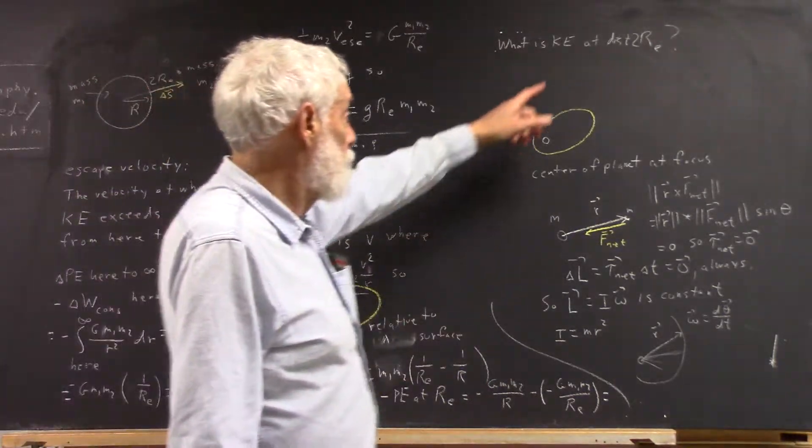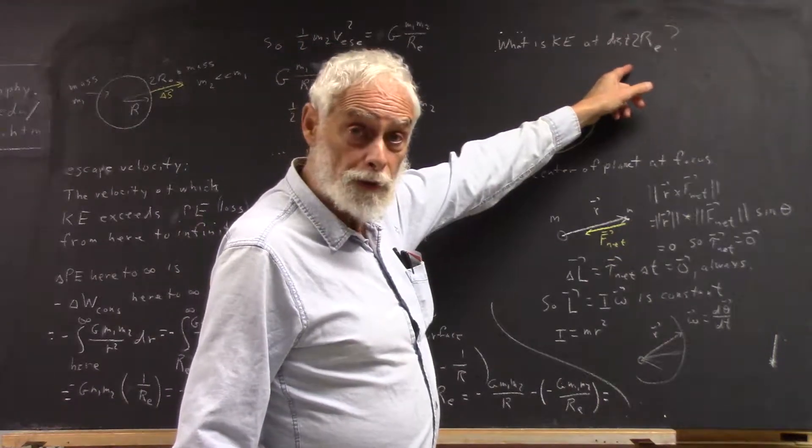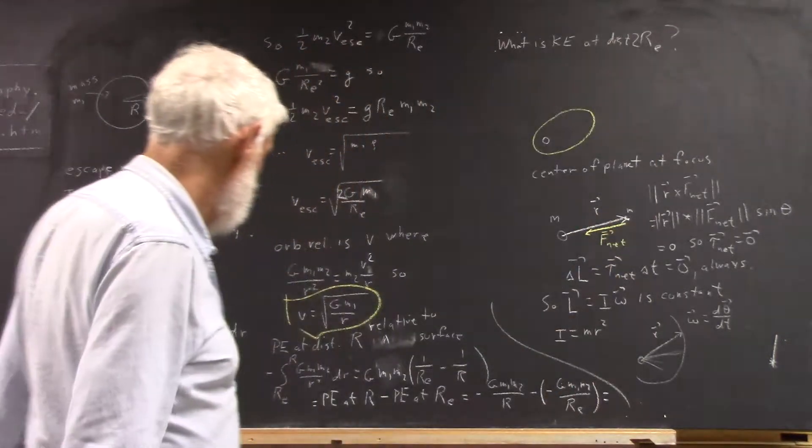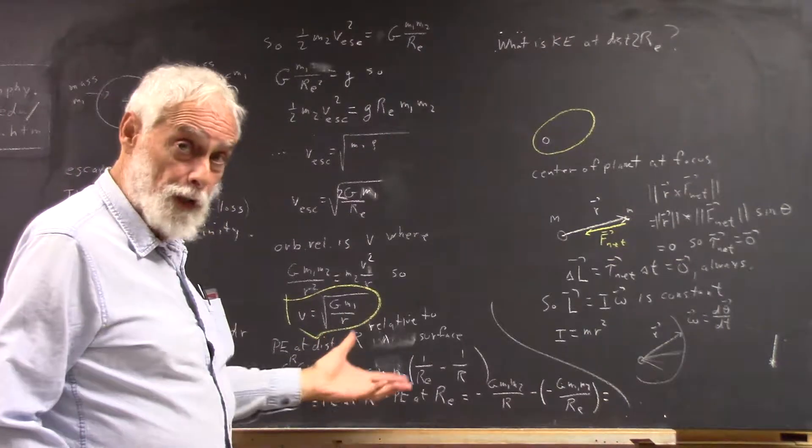I can think of what is the kinetic energy of a circular orbit at this distance, and of course then we can compare that with the potential energy at that distance.